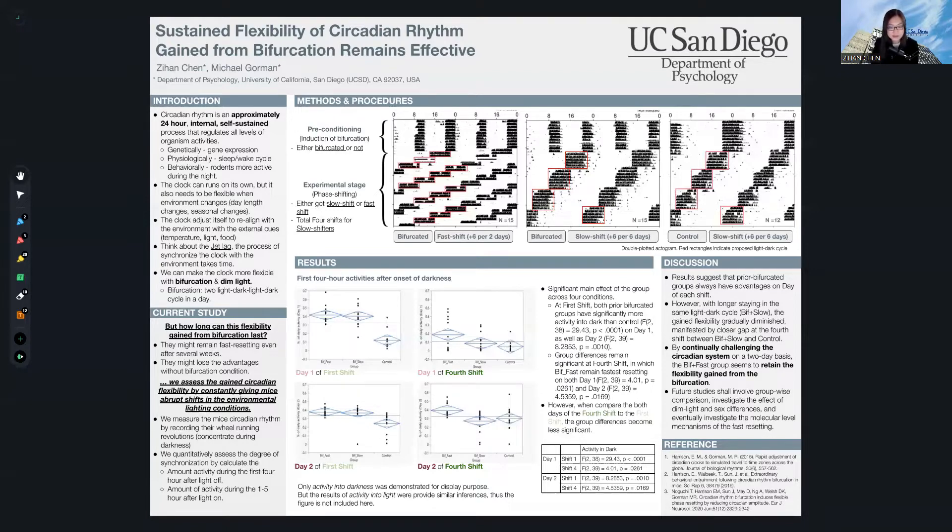We manipulate two independent variables in our study. First is whether they have bifurcated history or not, and the second is the frequency of how often they received the six-hour advances in schedules. The frequency is divided into two separate groups: either fast shifting or slow shifting. Fast shifting means each six-hour advance in lighting schedule per two days, and slow shifting means each six-hour advance per six days.